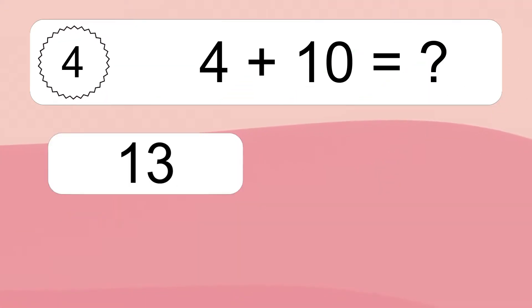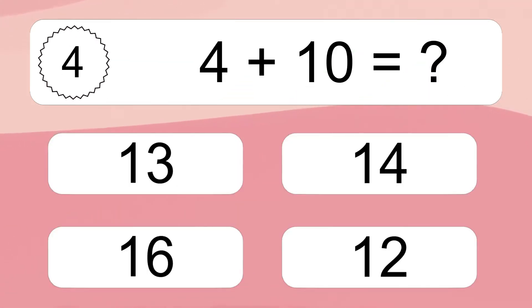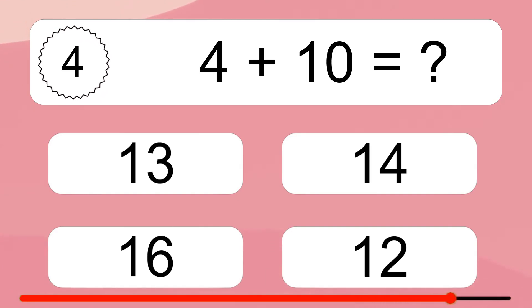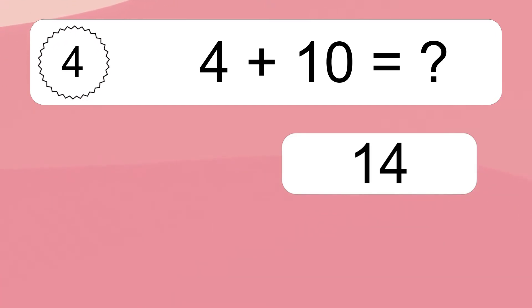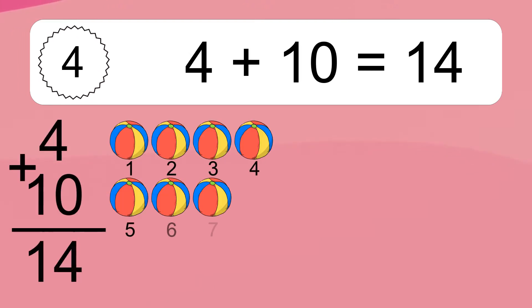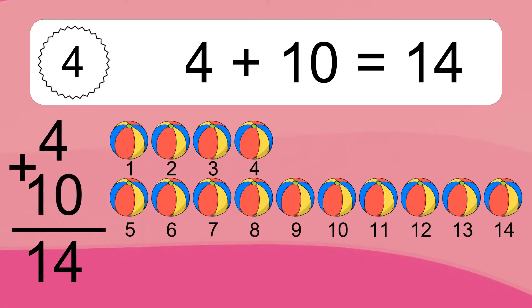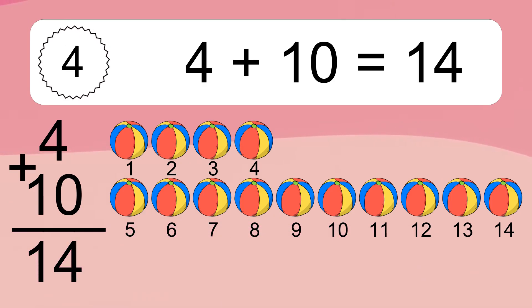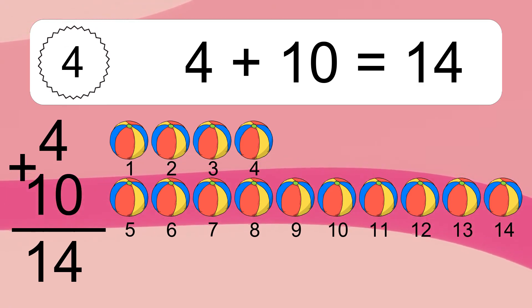4 plus 10 equals what? 4 plus 10 equals 14. Let's count it. 1, 2, 3, 4, 5, 6, 7, 8, 9, 10, 11, 12, 13, 14.